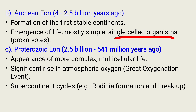The Proterozoic Eon was from 2.5 billion up to 541 million years ago. The major events were: one, the appearance of more complex multicellular life; two, a significant rise in atmospheric oxygen; and three, the supercontinental cycles, especially the formation of Rodinia and its breakdown.